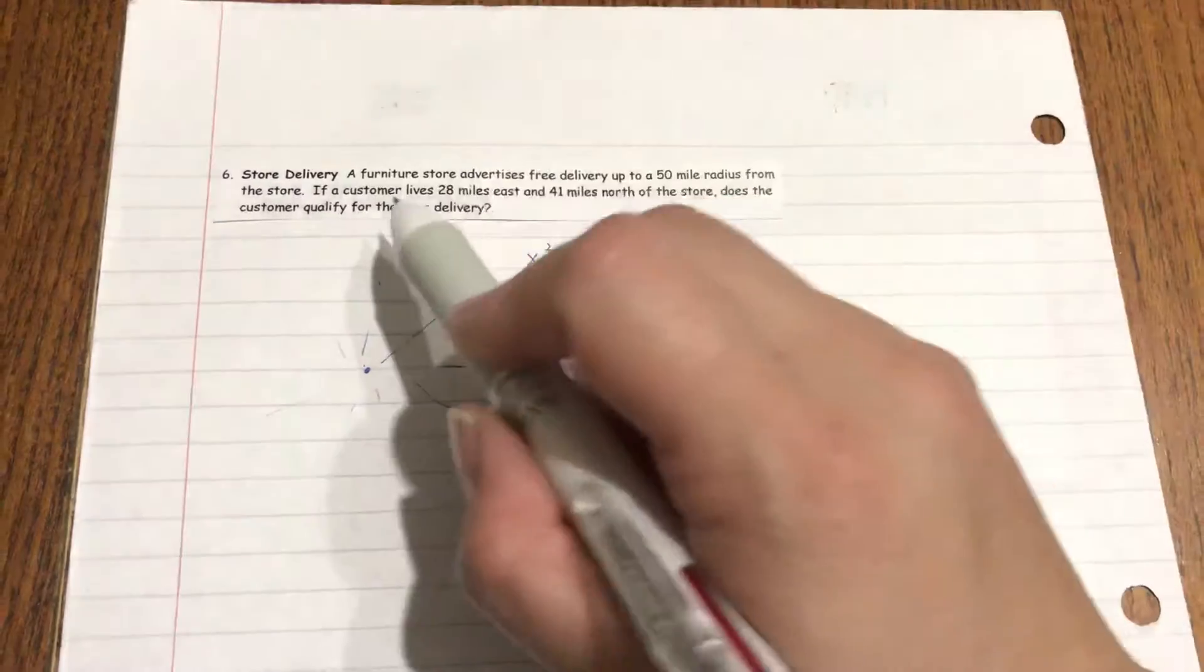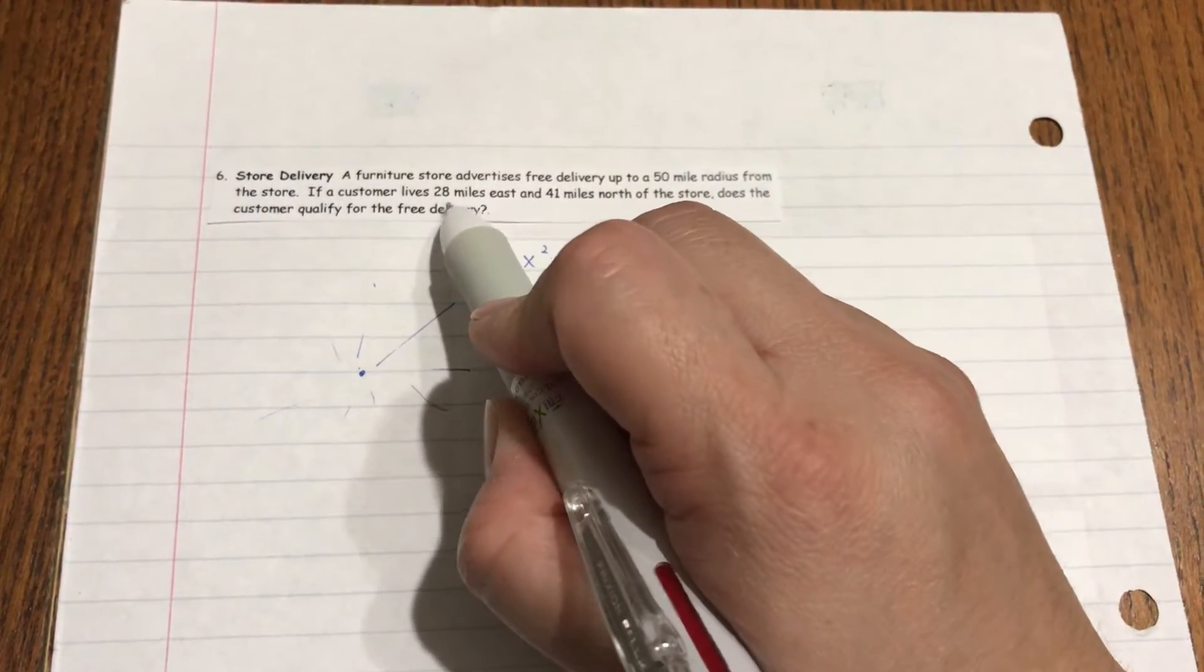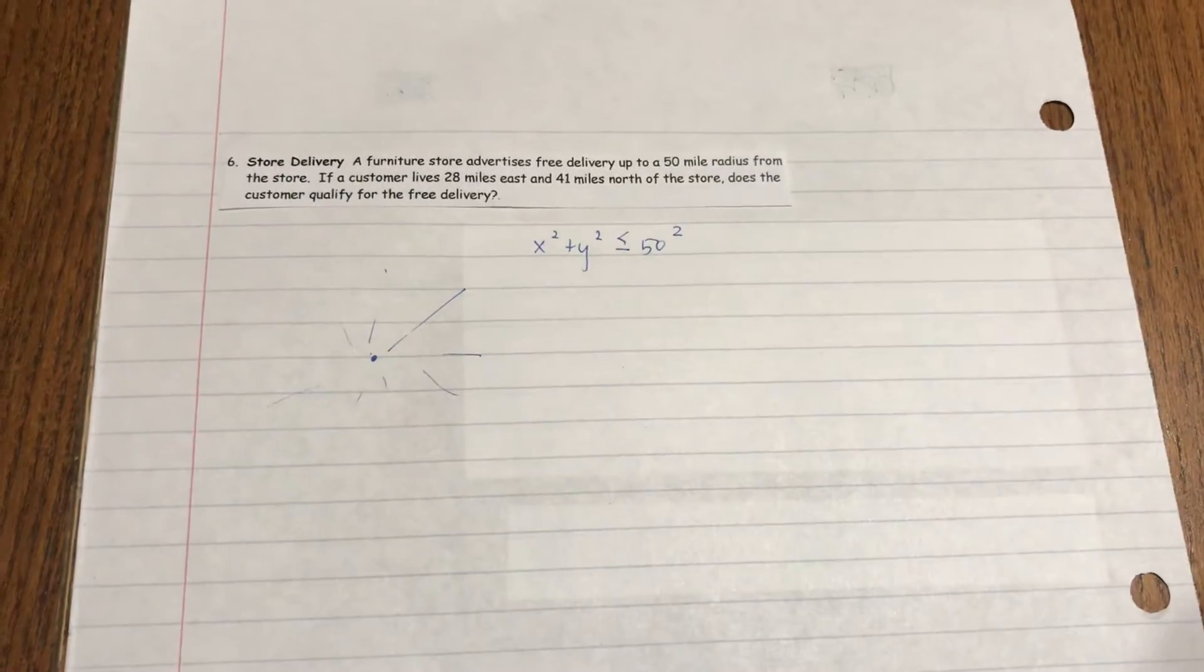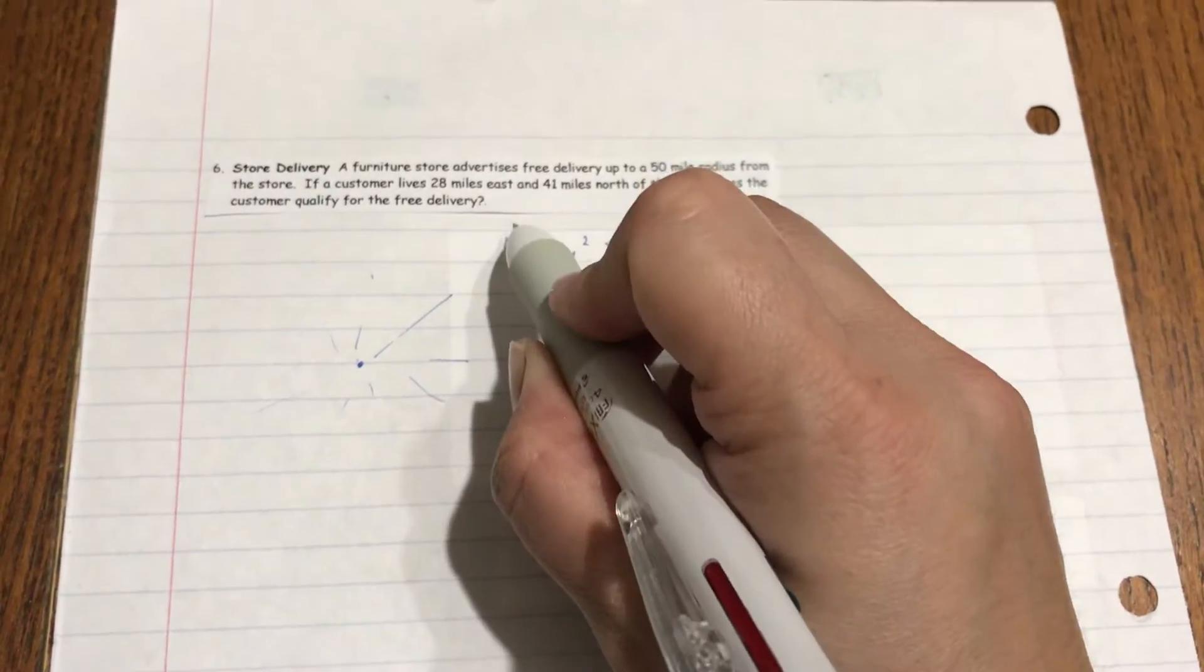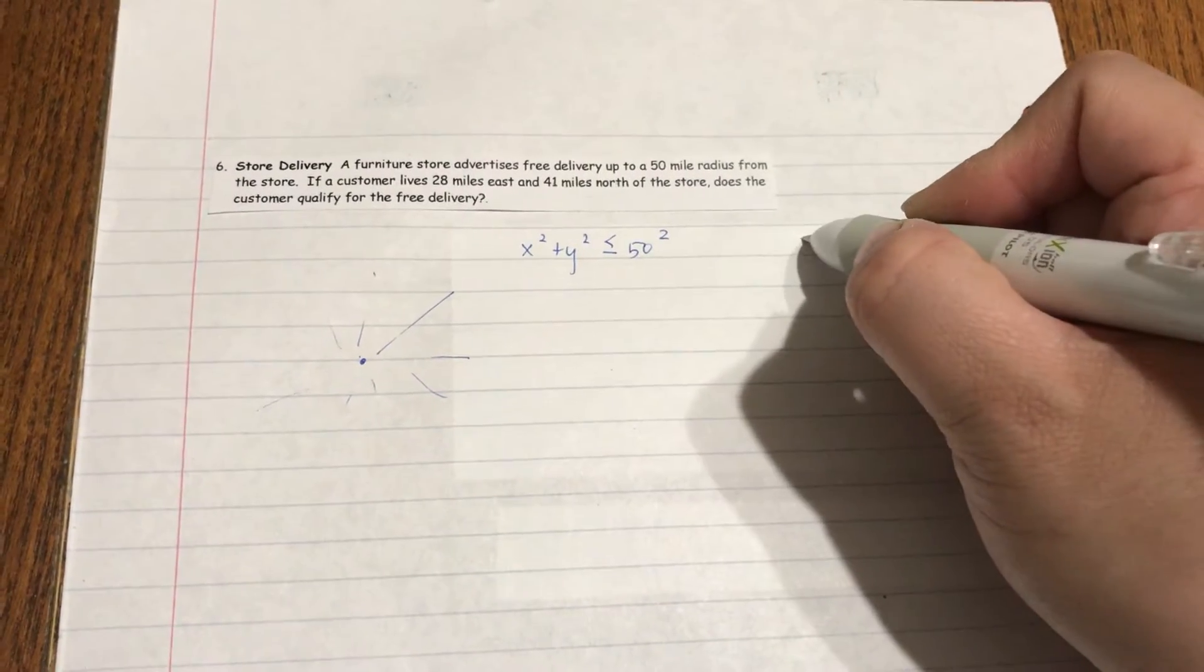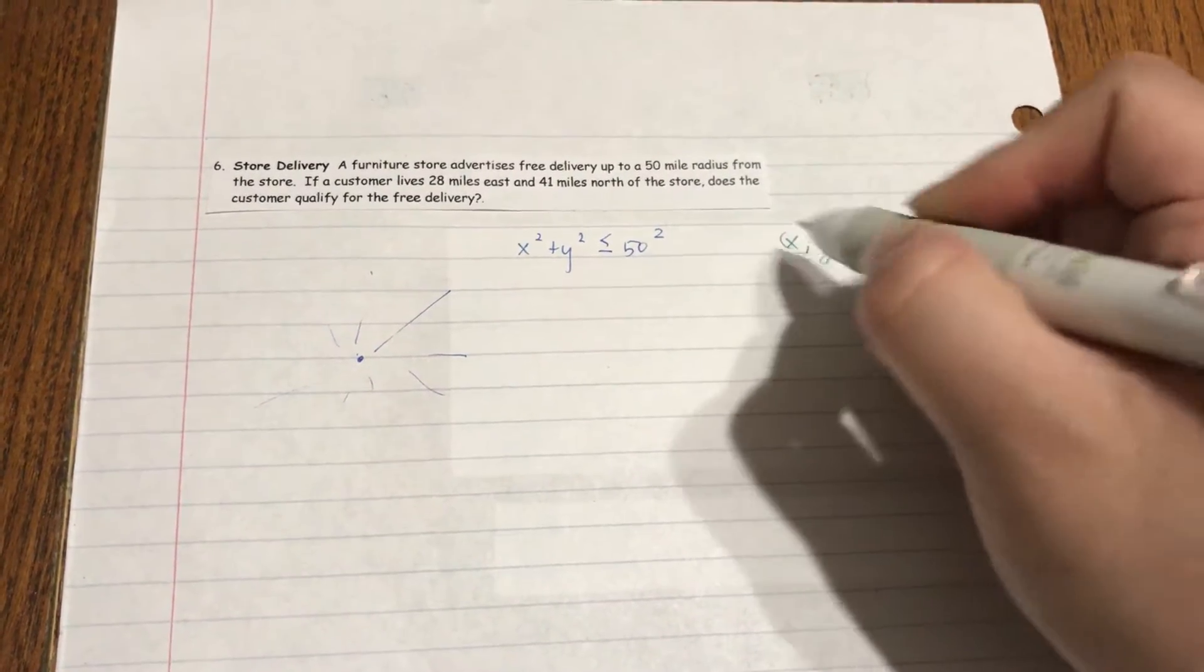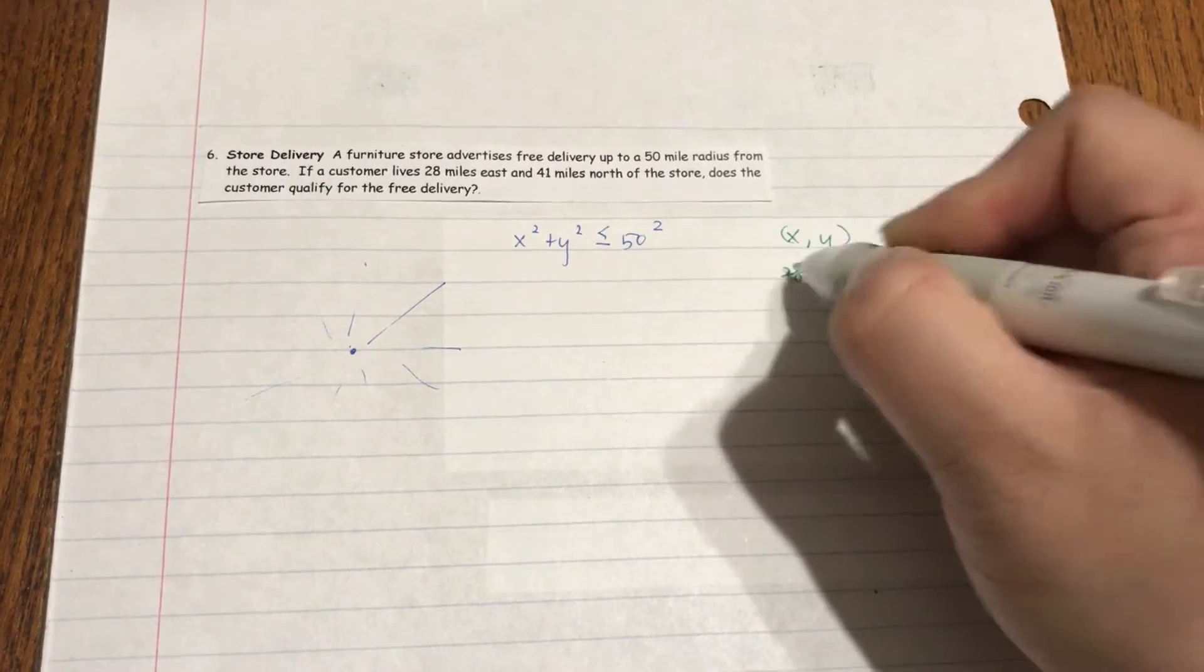50 is your radius. Now it says the customer lives 28 miles east and 41 miles north of the store. The customer's coordinates are x comma y, which is 28 and 41.